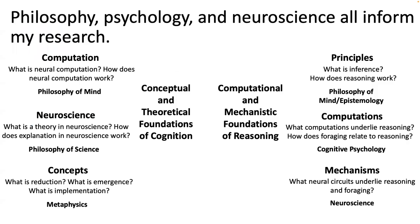Before getting started, allow me to say a little bit about myself. I am a neuroscientist and a philosopher, and I appeal to methods from philosophy, psychology, and neuroscience to understand the mind. I have a general research program that investigates the foundations of reasoning, in particular by applying principles from foraging theory. I also have another research program investigating the theoretical and conceptual foundations of cognition, in particular the foundations of neurocognitive phenomena — cognition that results from brains.